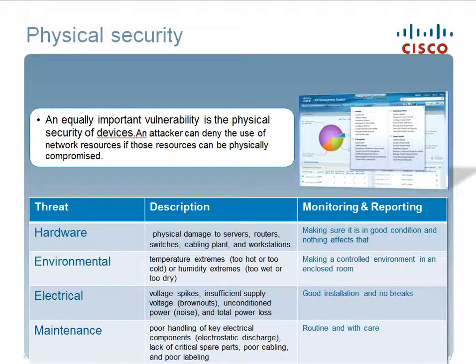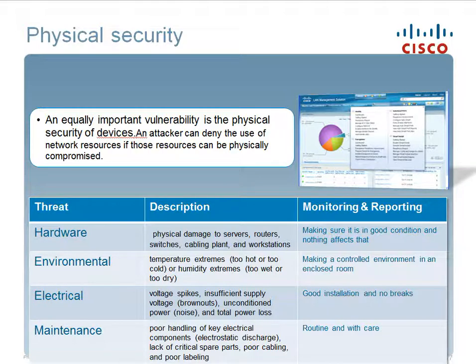Physical security: an equally important vulnerability is the physical security of devices. An attacker can deny the use of network resources if those resources can be physically compromised. Hardware threats include physical damage to servers, routers, switches, cabling plants, and workstations. By monitoring and reporting all kinds of failures, making sure equipment is in good condition, and ensuring nothing affects it, we can avoid any incidents.